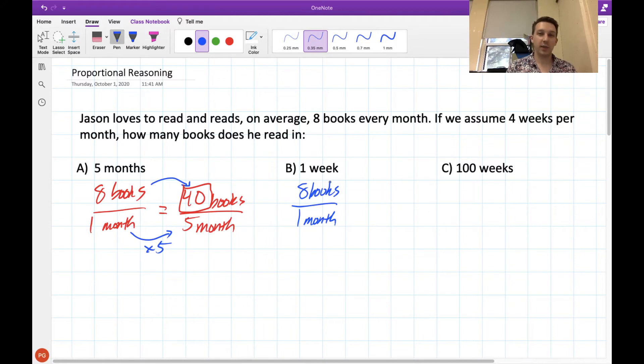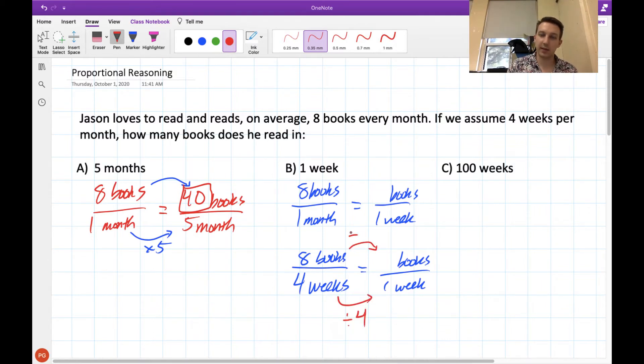For our next one here, in 1 week, we want to take our rate of 8 books per month and convert it into 1 week. Well, you'll notice that we have months and weeks on the bottom here, and we can't really compare those. So what we need to do is turn these months into weeks. We're told to assume 4 weeks per month, so that tells us that this ratio could also be written as 8 books per 4 weeks. To go from this fraction into the other fraction, we would have to divide by 4. And we would do the exact same thing on the top, and our answer would be that he reads 2 books every week.